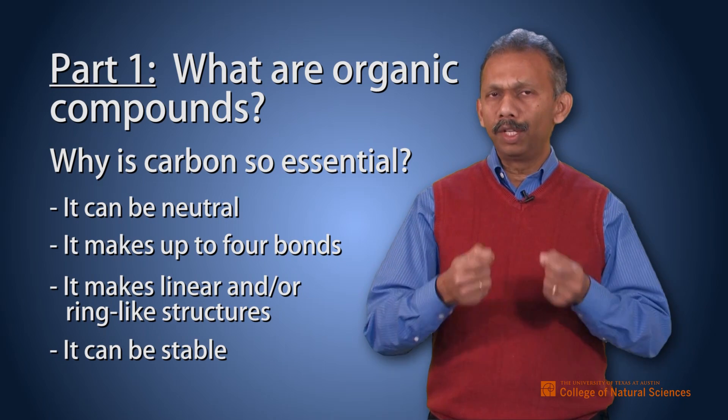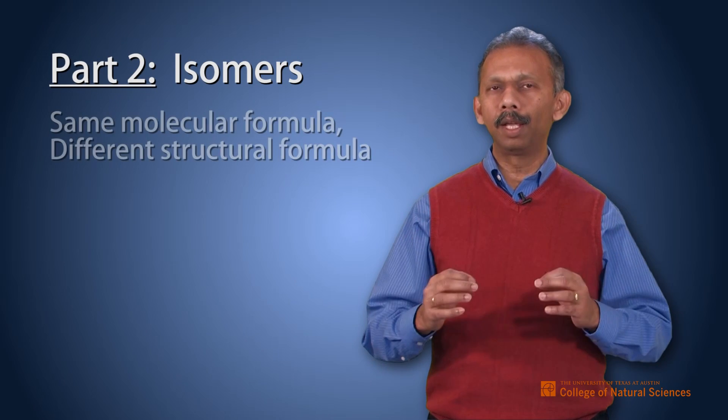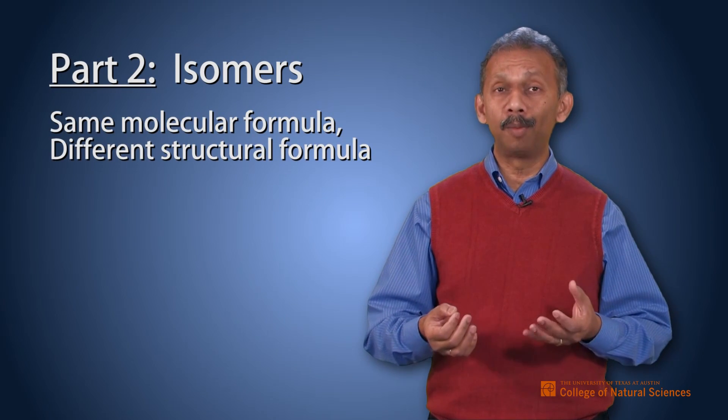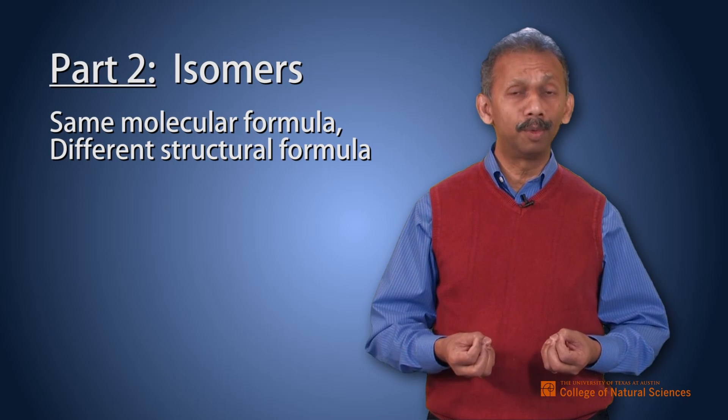Once you understand that, the second part of this chapter refers to isomers. Isomers are molecules that have the same molecular formula but different structural formula. They are grouped into three kinds of isomers.